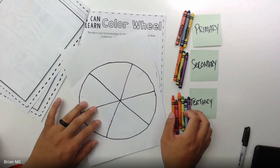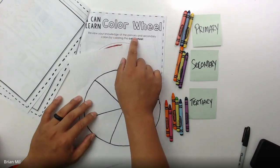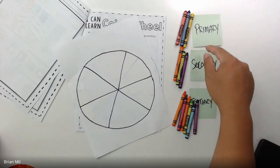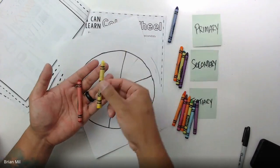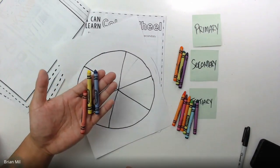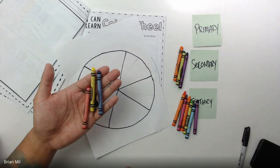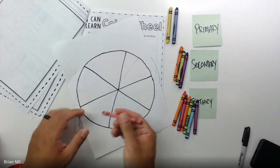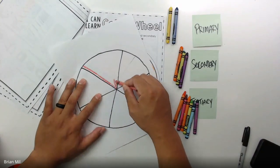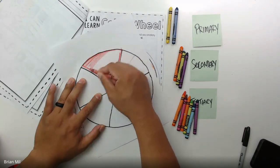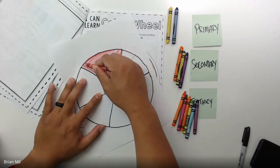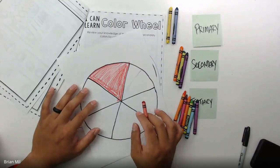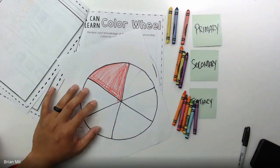This is going to be a review of your knowledge of primary and secondary colors by coloring the color wheel. I don't need a volunteer because I'm sure you all know the primary colors are red, yellow, and blue. Get those colors out — it doesn't matter if it's marker, crayon, or colored pencil. Start with red: fill one of the triangles with red. I'm picking the top one that veers to the left a little.